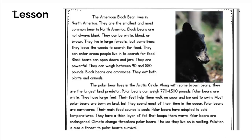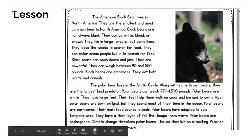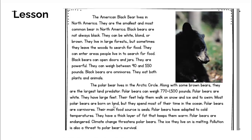Now let's figure out what the main idea is of paragraph four. The polar bear lives in the arctic circle. Along with some brown bears, they are the largest land predator. Polar bears can weigh up to 770 to 1,500 pounds. Polar bears are white and have large feet. Their feet help them walk on snow and ice and to swim. Most polar bears are brown on land, and they spend most of their time in the ocean. Polar bears are carnivores — their main food source is seals. Polar bears have adapted to cold temperatures; they have a thick layer of fat that keeps them warm. Polar bears are endangered. Climate change threatens polar bears — the ice they live on is melting. Pollution is also a threat to polar bear survival.